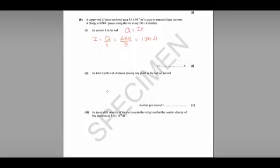Part II, the total number of electrons passing any point in the rod per second. We know that in one second, 130 Coulombs of charge flows. And we know that each electron has a charge of 1.6 times 10 to the minus 19 Coulombs.